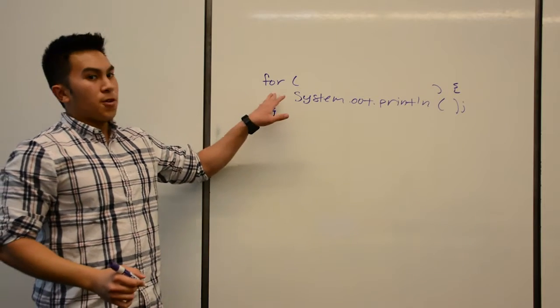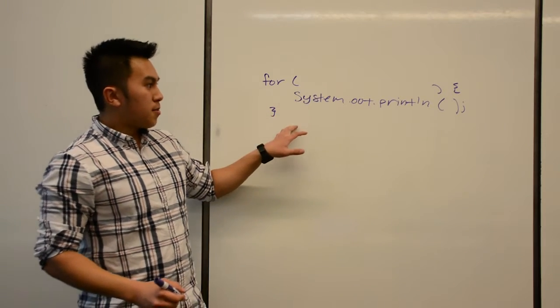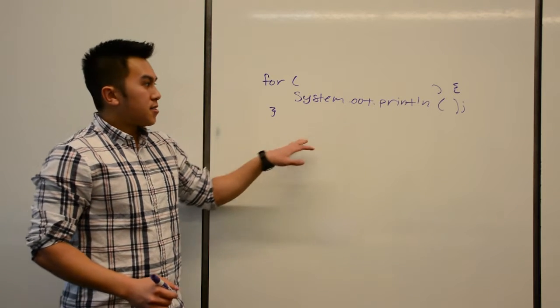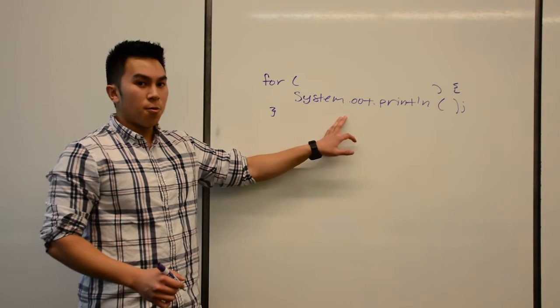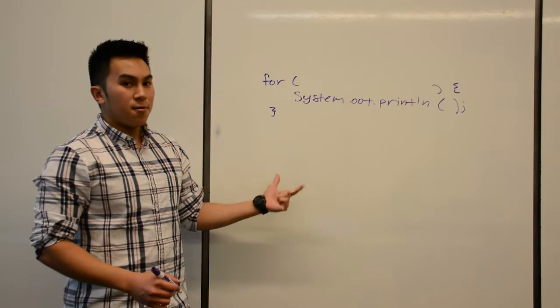We start a for loop with the keyword for, and then we have a set of parentheses, and then we have curly braces enclosing the code that we want to execute repeatedly. Since we want to execute this code for however many times we want, we're going to need a way to tell the for loop where to start and when to stop.